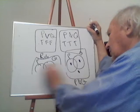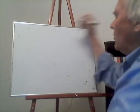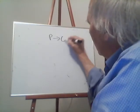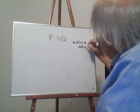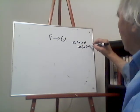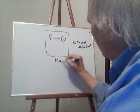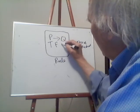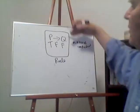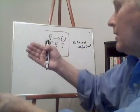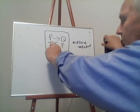Now I'm going to talk about the arrow, which is called material implication. P arrow Q is called material implication, pronounced 'if P then Q.' Let me tell you the rule first. The rule is T, F, F — meaning if P then Q is false only when P is true and Q is false.